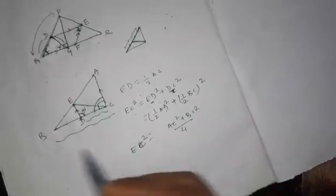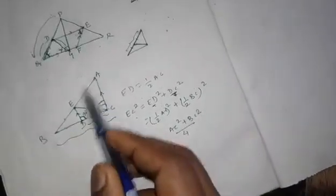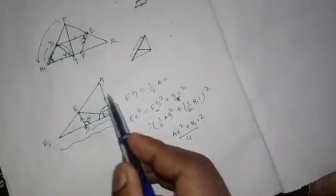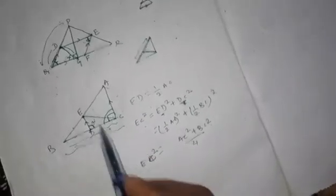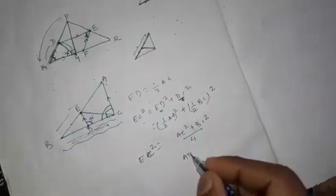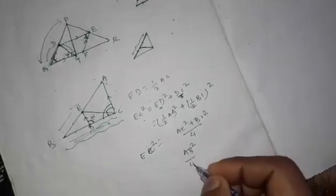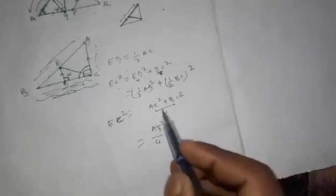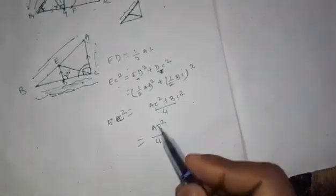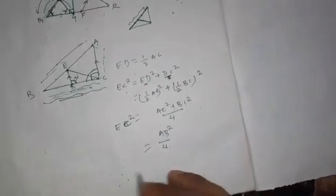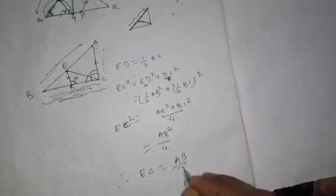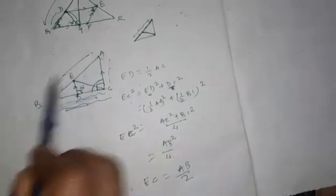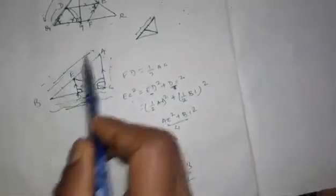Now, in right angle triangle ABC, AC squared plus BC squared equals AB squared. Therefore EC squared equals AB squared divided by 4, because perpendicular squared plus base squared equals hypotenuse squared. Therefore EC equals AB divided by 2 — that is what we proved: EC is half of AB.